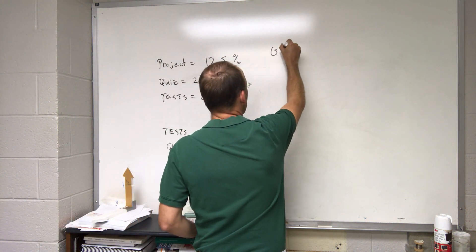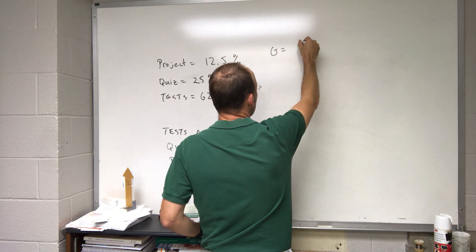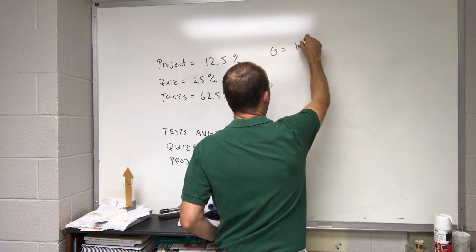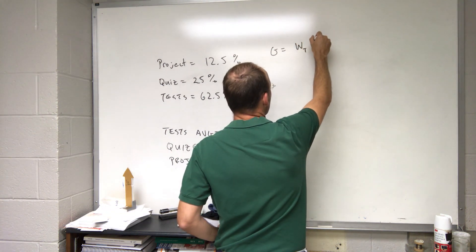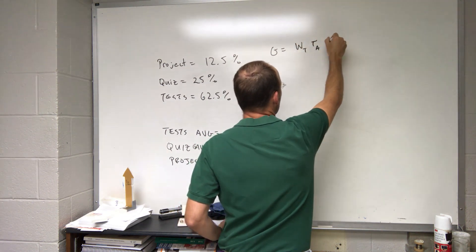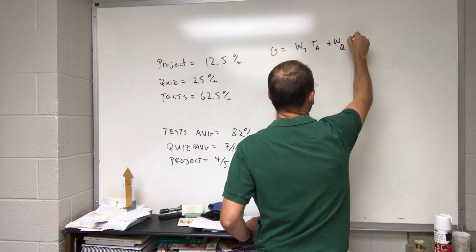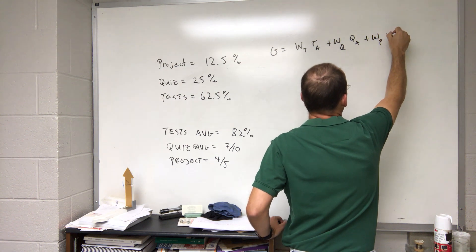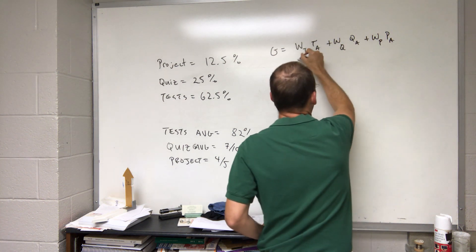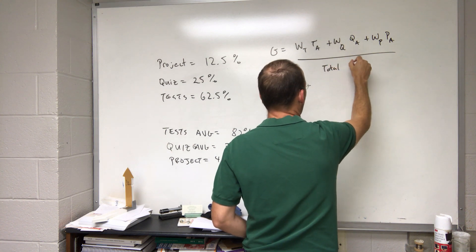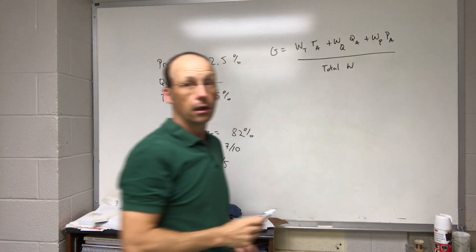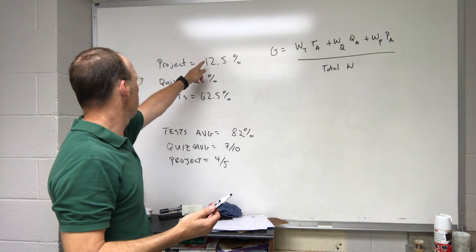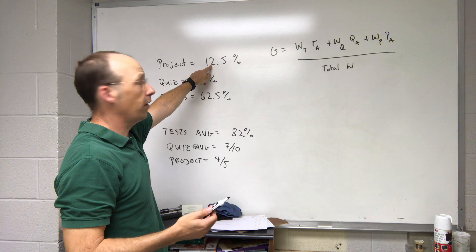So the grade is calculated as following: grade is going to be equal to—I'll write this out in the simple way—it's going to be the weight of the test times your test average plus the weight of the quiz times the quiz average plus the weight of the project times the project average divided by total weight.